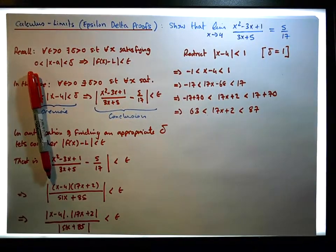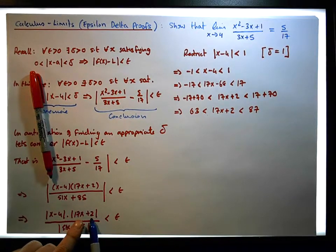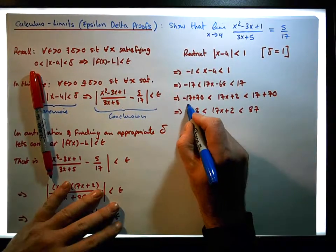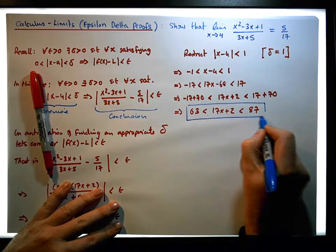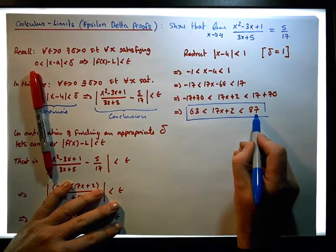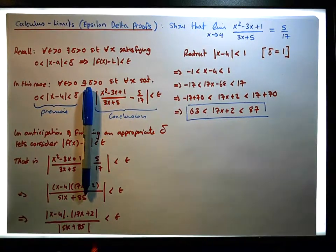The important thing here is that we just want to see what's going on with 17x plus 2 — what's going on with this absolute value — very close to 4, within one unit of 4. What we now know is that 17x plus 2 is bounded below by 63 and bounded above by 87. Now what about the other factor — what about 51x plus 85?